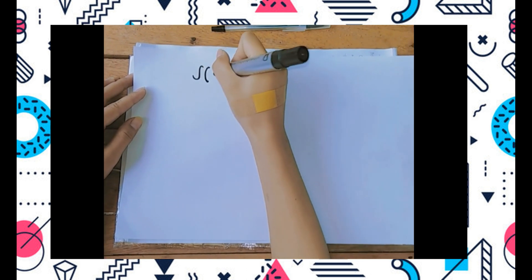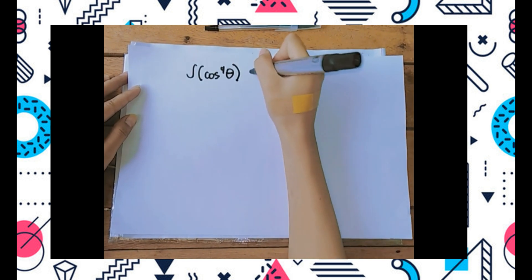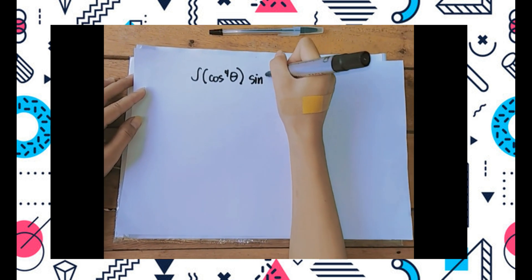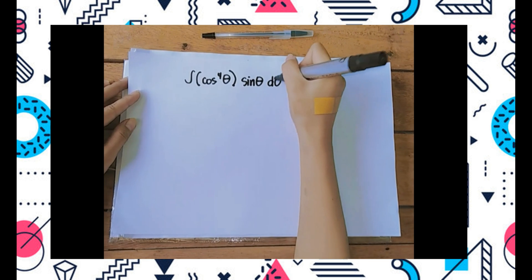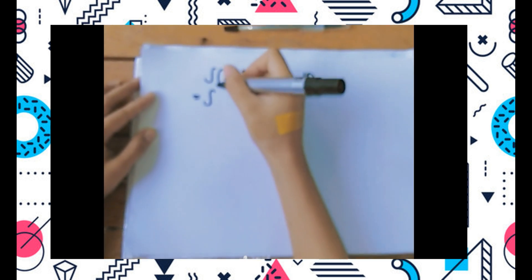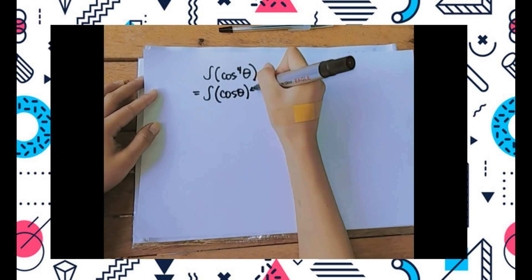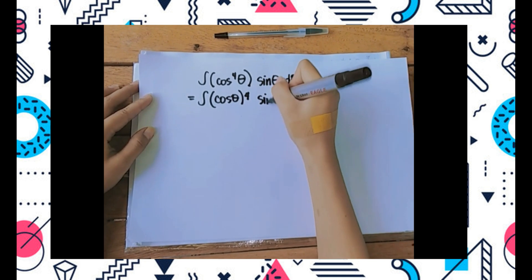Suppose we have integral cosine to the fourth of theta times sine of theta d theta. Remember that cosine of theta to the fourth you can rewrite as the following. To see it a little bit better, I'm going to rewrite this to make things clearer.